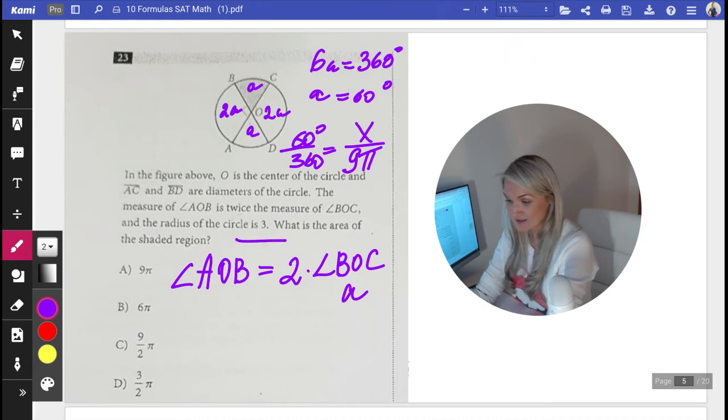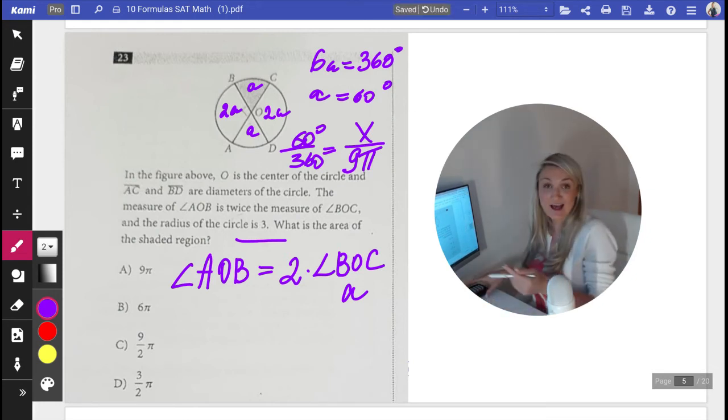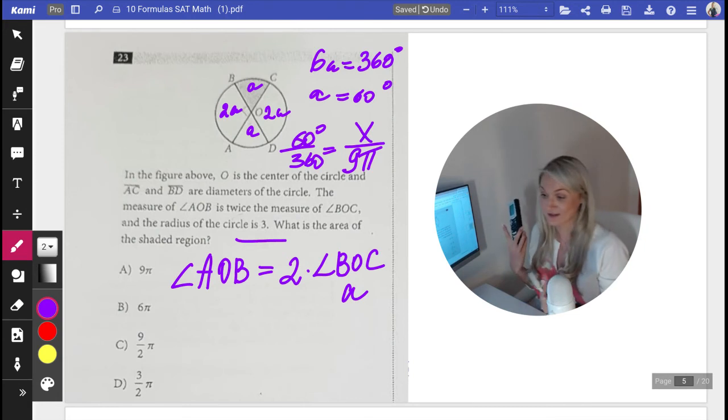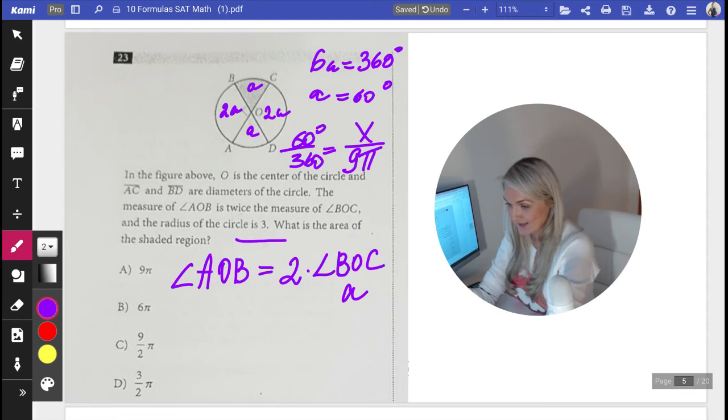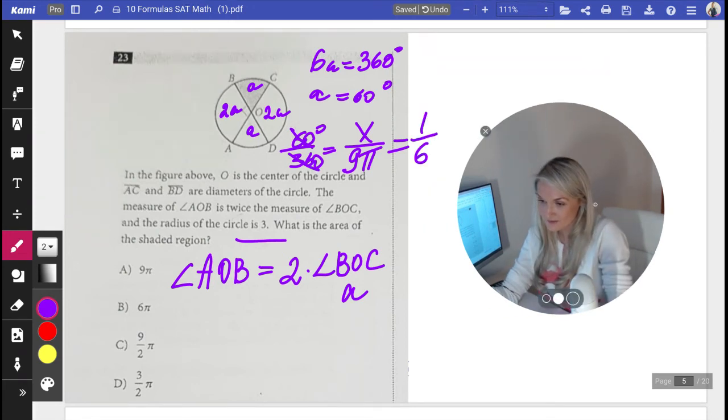Now what you do is if this is a calculator section, so feel free to use your calculator if you want. I prefer to always try to rely on my own computational skills. And I know that this 60 over 360 is going to equal 1/6.